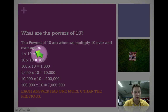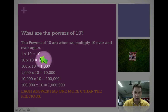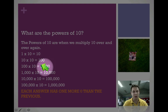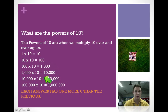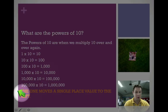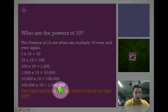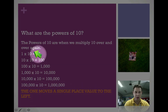This answer has one zero — 10 — but 100 has two zeros. We multiply it by 10 again and we go one step up; we get three zeros for 1,000 and four zeros for 10,000. The other important thing to notice is that the 1 moves a single place value to the left each time.